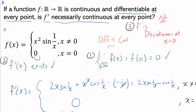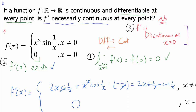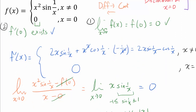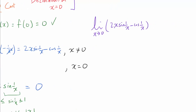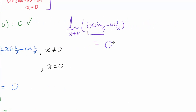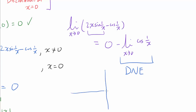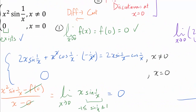Now let's show that f' is discontinuous at x = 0. We take the limit as x approaches 0 of f'(x) = 2x·sin(1/x) − cos(1/x). The limit of 2x·sin(1/x) is 0 by the same squeeze theorem reasoning. But the limit as x→0 of cos(1/x) does not exist — just like sin(1/x), cosine of 1/x oscillates between 1 and negative 1 infinitely many times as x→0. Therefore this limit does not exist, meaning f' is not continuous at x = 0.